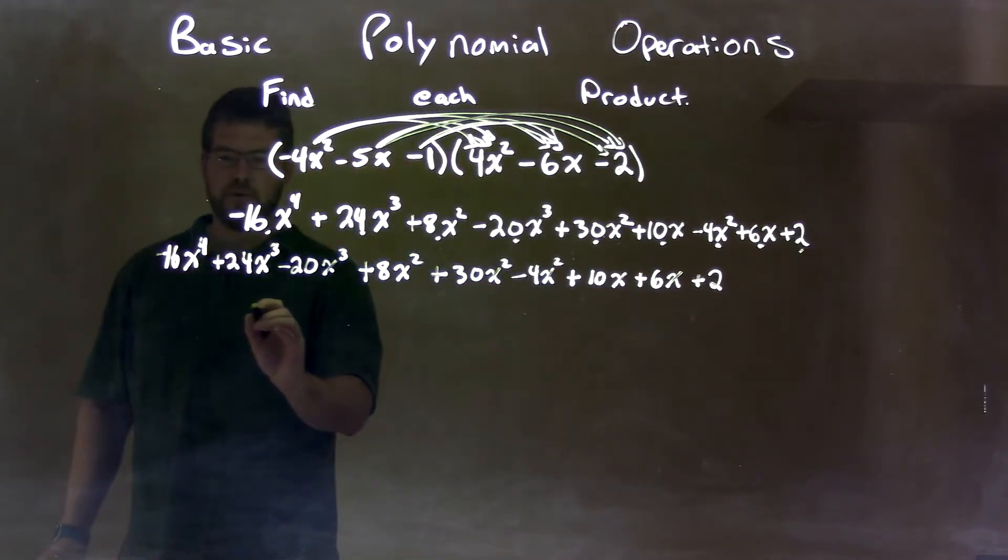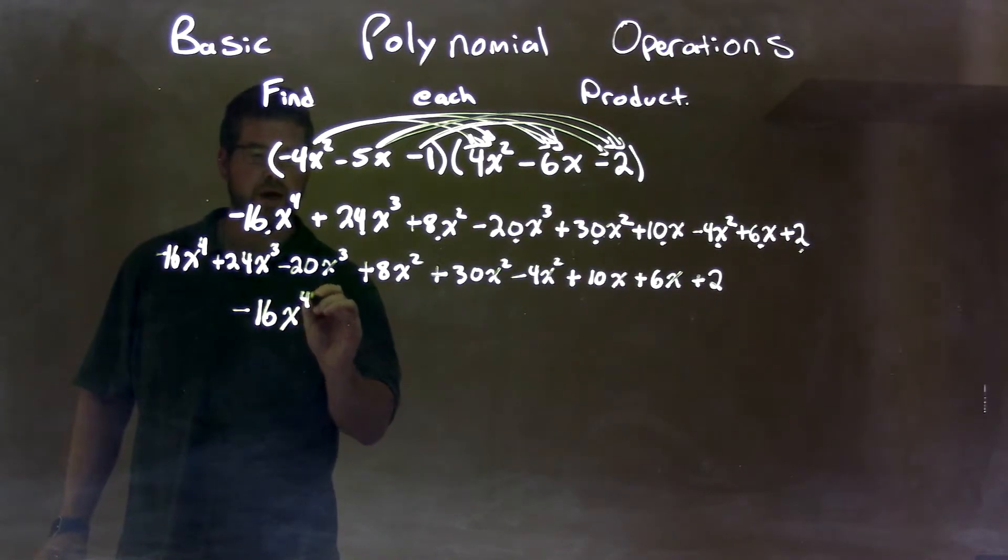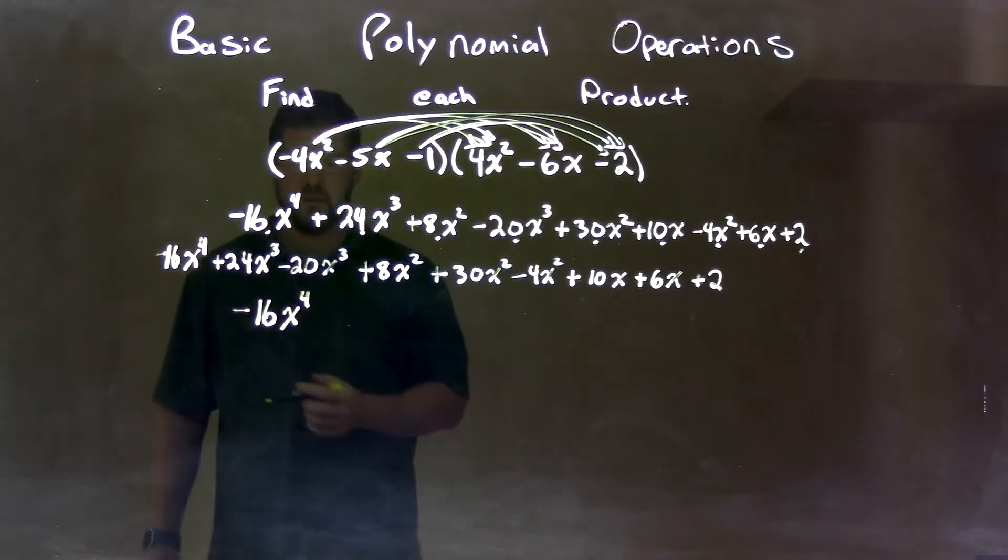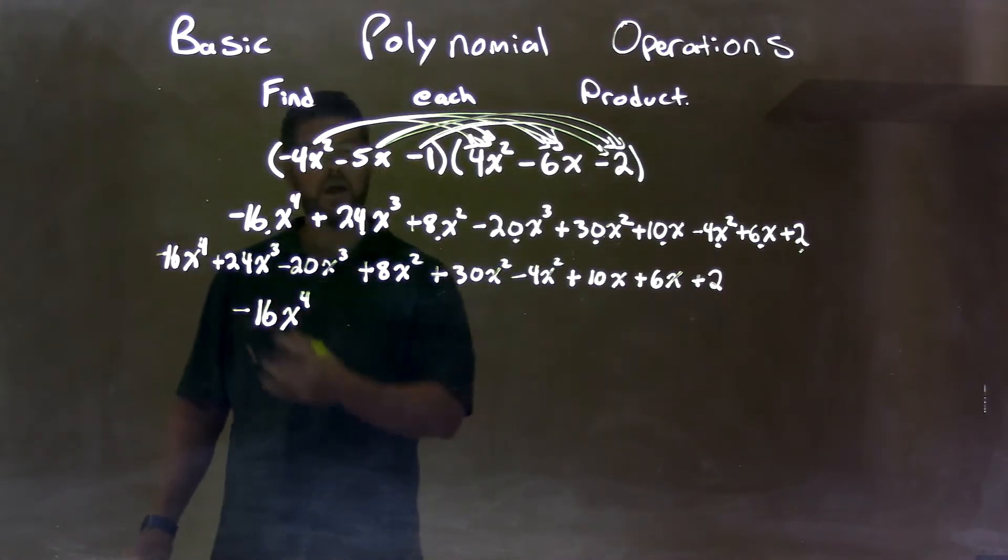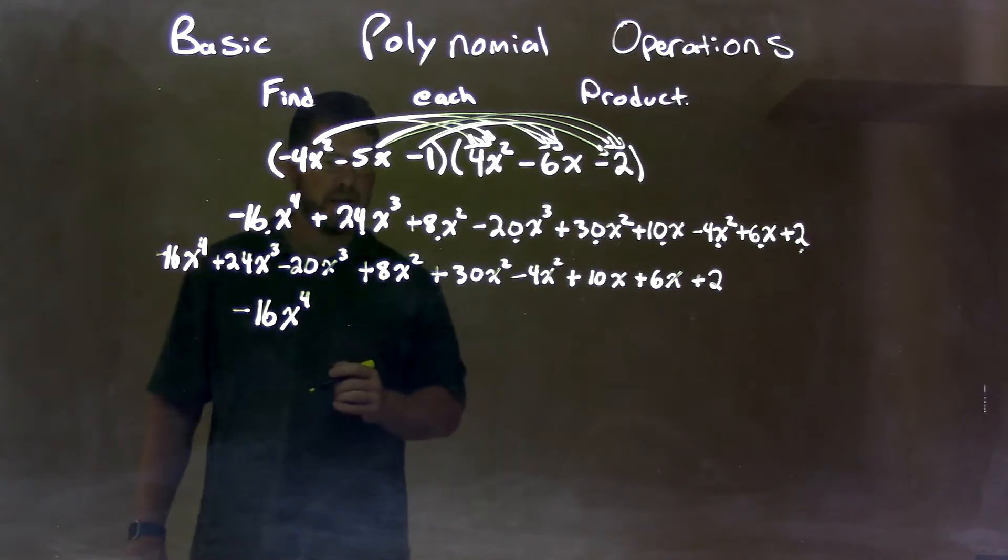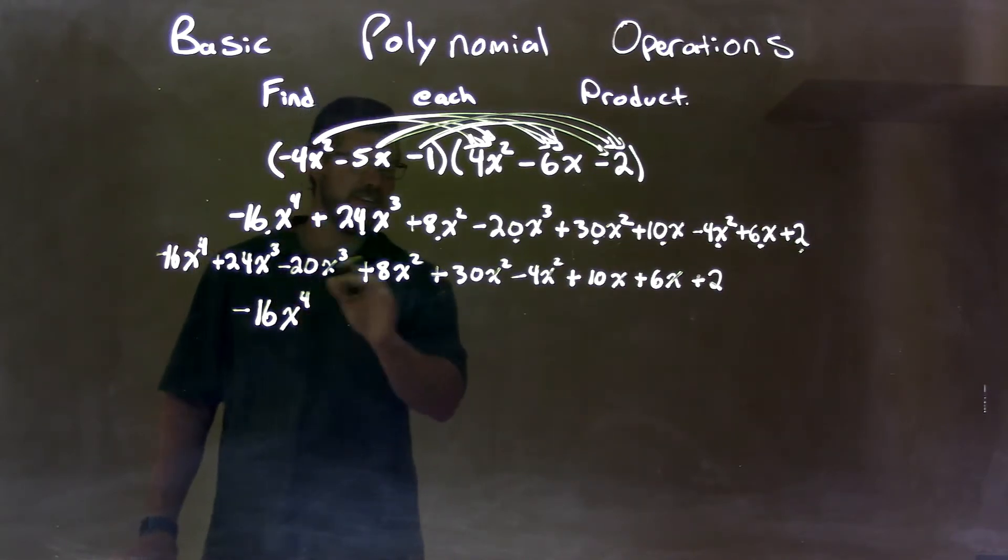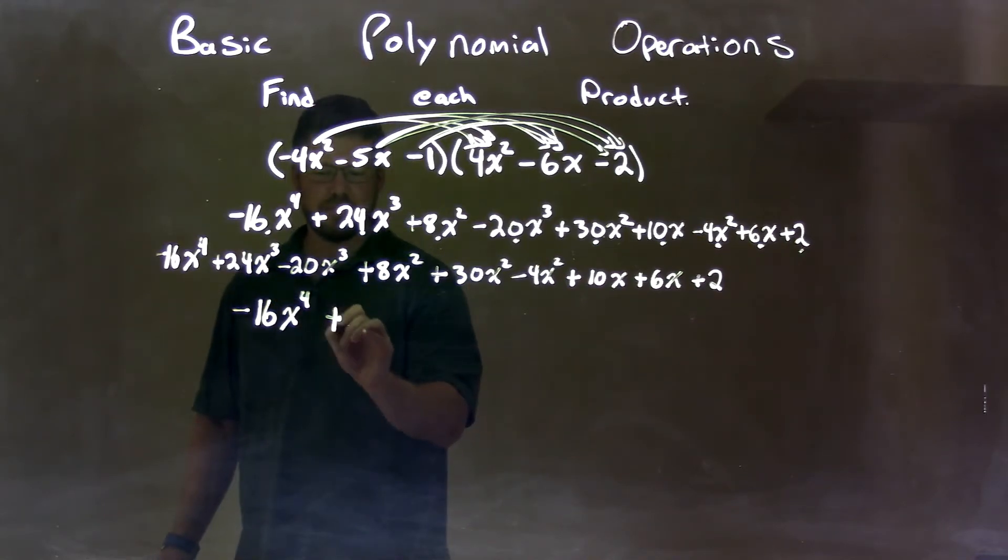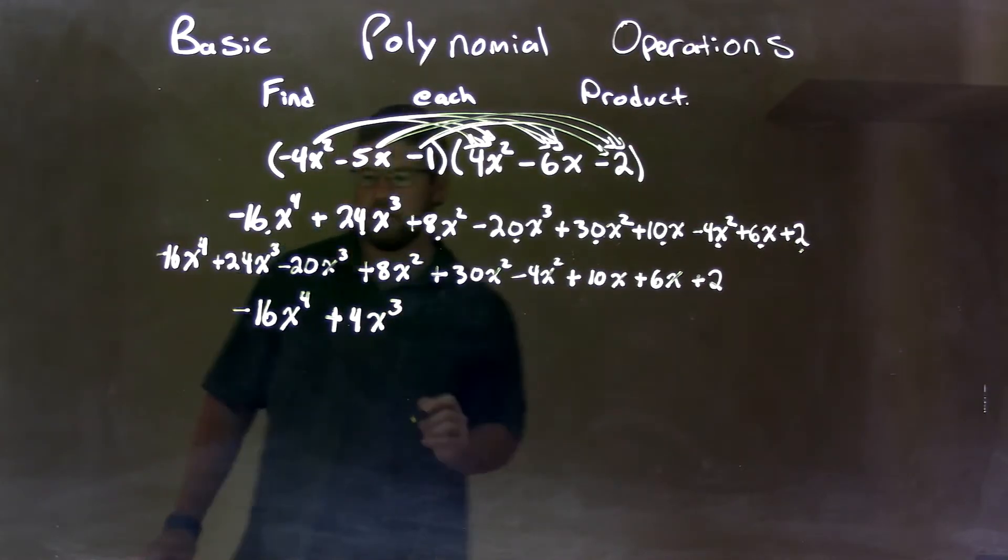Well, nothing else is the fourth power, so we just have minus 16x to the fourth power. Now to the third power. Well, 24x to the third minus 20x to the third is just 4x to the third. That's the only two-third power. So that's just 4x to the third power.